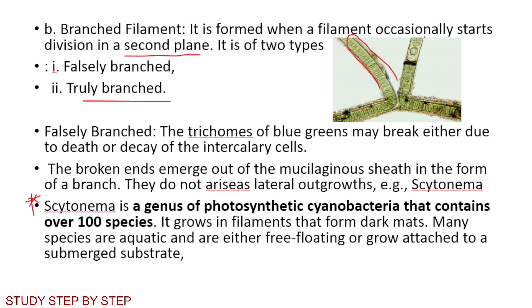Branched filaments are formed when a filament occasionally starts division in a second plane. They may be of two types: falsely branched and truly branched. In falsely branched forms, the trichomes of blue-greens may break due to death or decay of intercalary cells, and these broken ends emerge out through the mucilaginous sheath in the form of a branch. They are called falsely branched because they do not arise from lateral outgrowth. Example: Scytonema — a genus of photosynthetic cyanobacteria that grows in filaments forming dark mats.